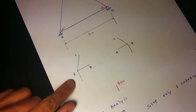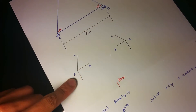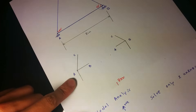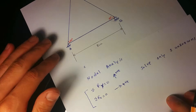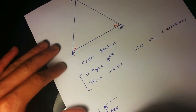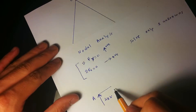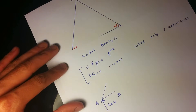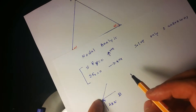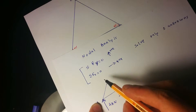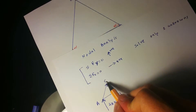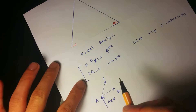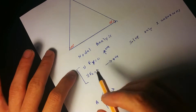We start from node A. The reaction force here is 4 kilonewtons upwards. At node A we have members going to B and to C. The reaction force is already known, so we end up with two unknowns. We consider members AC and AB both to be in tension, and we start to apply the two equilibrium equations.